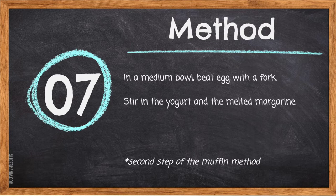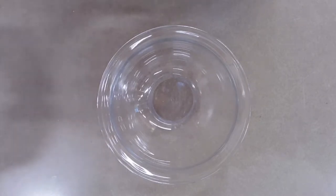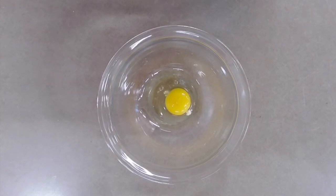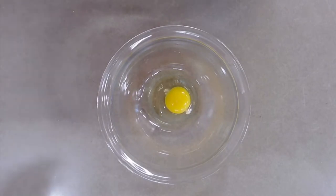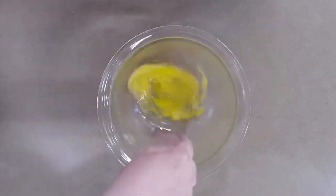Step seven: in a medium bowl, beat the egg with a fork, then stir in the yogurt and the melted margarine. This is the second step of the muffin method. Crack the egg on the countertop, not on the side of the bowl — cracking on the bowl can cause eggshell to fling into the mixture. Then using a metal fork give it a good stir.